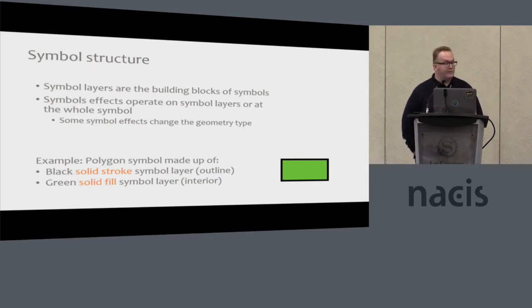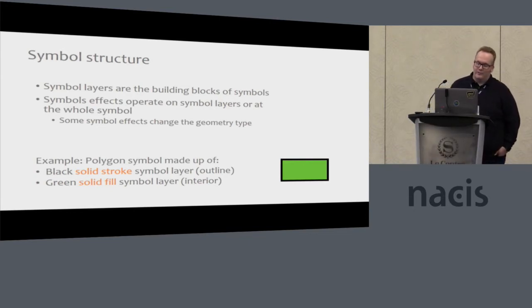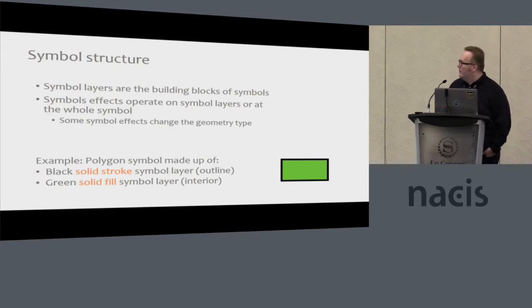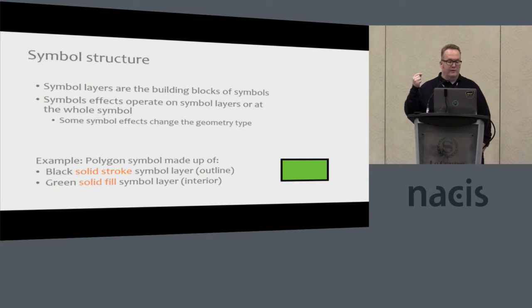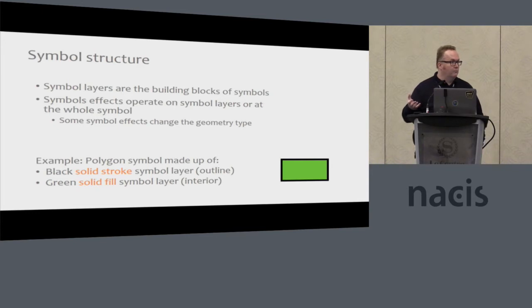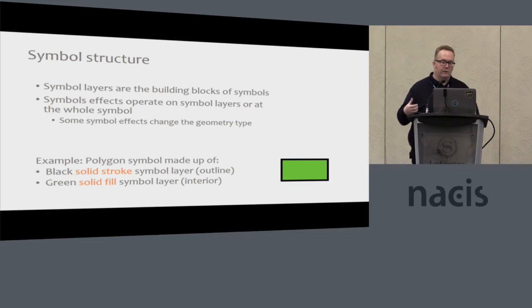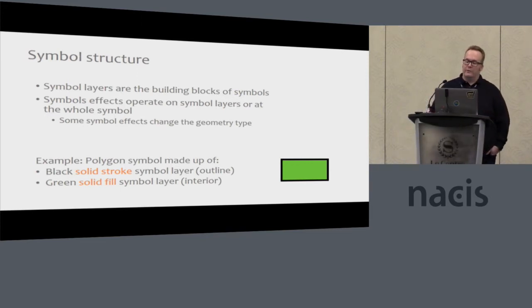Another key part is that symbol effects sometimes can change the geometry type — we call those shapeshifters informally on our team. The most basic example of how a symbol is structured in ArcGIS Pro — slightly different than in ArcMap — is that a polygon symbol would be made up of two layers: a solid stroke for the outline, and a solid fill. In ArcMap, that would have been just one layer, but this breakdown into more primitive symbol layers makes it more flexible.